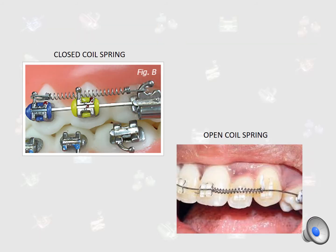This is a closed coil spring and an open coil spring — both are active components of fixed appliances. A closed coil spring, as the name implies, functions to close space. An open coil spring opens up space so that we can align teeth. It is a very simple concept.